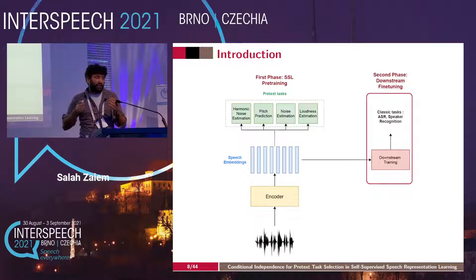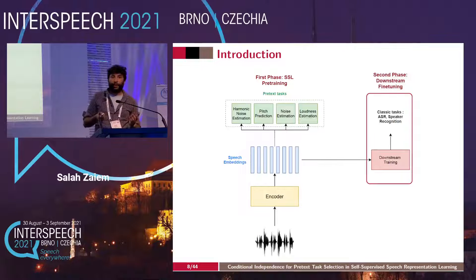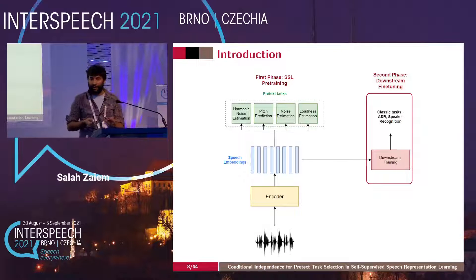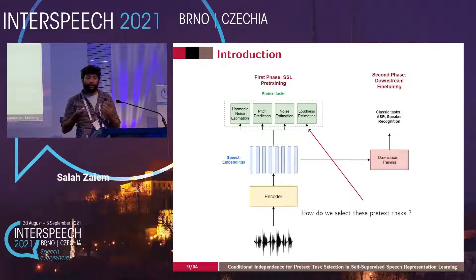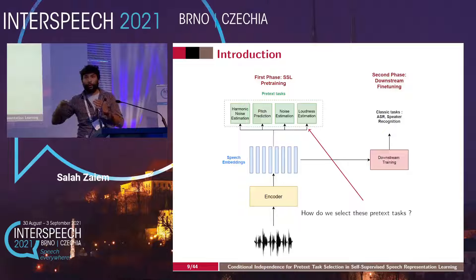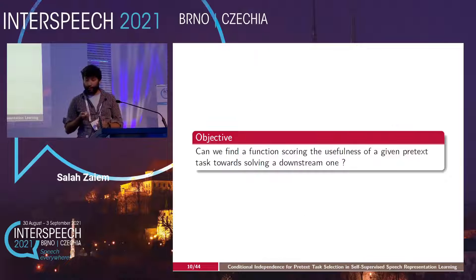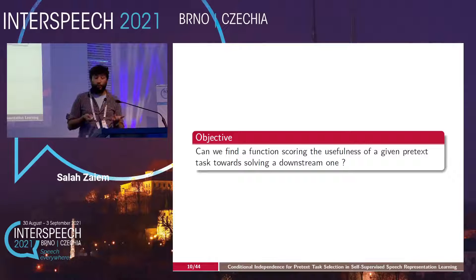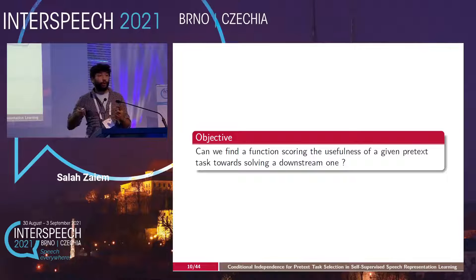For instance, a Wave2Vec 2.0 large model training requires 128 GPUs for five days. So what we try to do is find a way to select those pretext tasks without the whole empirical pipeline. The question is: can we find a function that would score the usefulness of a given pretext task towards solving a downstream one?